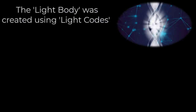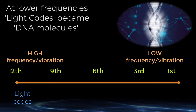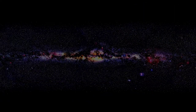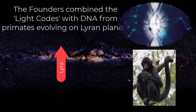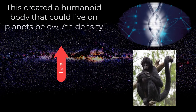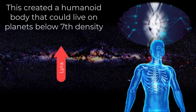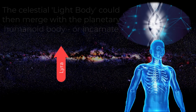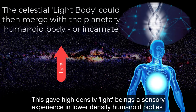The light body was created using light codes. At lower frequencies, light codes became DNA molecules. The founders combined the light codes with DNA from primates evolving on Lyran planets. This created a humanoid body that could live on planets below 7th density. The celestial light body could then merge with the planetary humanoid body, or incarnate. This gave high density light beings a sensory experience in lower density humanoid bodies.